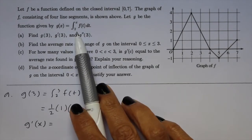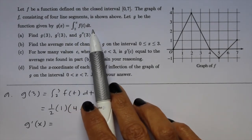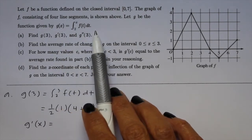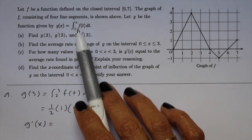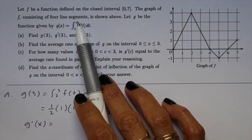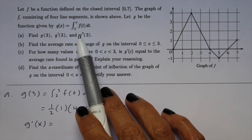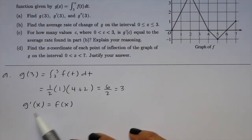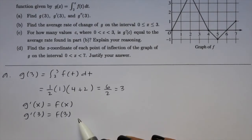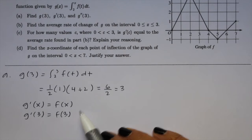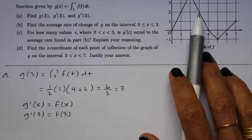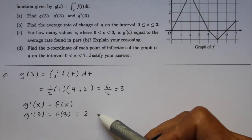g of x is the integral from 2 to x of f of t dt. To find g prime of x, we use the fundamental theorem of calculus. The limits are in the right order — the constant on the bottom, the variable on top — so we plug x into the function: g prime of x equals f of x. Therefore g prime of 3 equals f of 3, and from the graph, f of 3 is 2. So our final answer is 2.